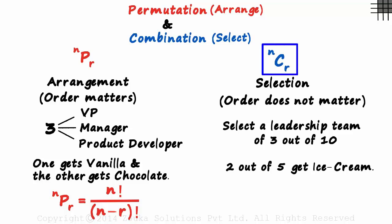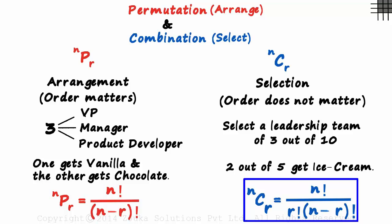We move on to combinations now. NCR. It's selecting three things from 10 distinct things. This will equal N factorial divided by R factorial times N minus R factorial. Yes, that's the formula for combinations.